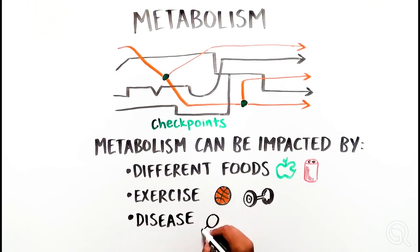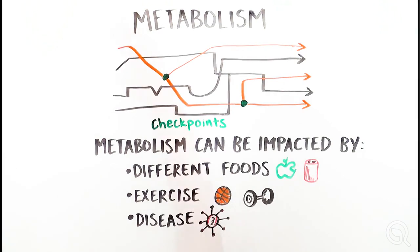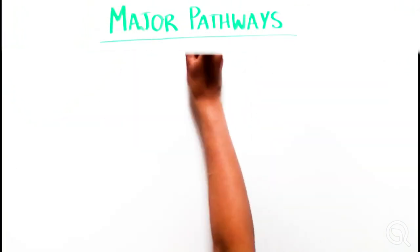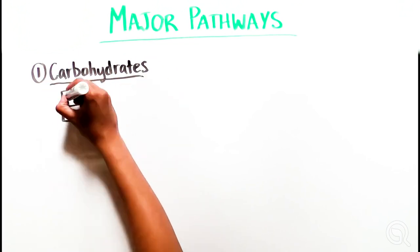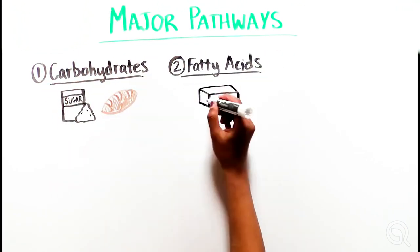Let's walk through some of these details together. The major metabolic pathways are those for carbohydrates, or sugars, fatty acids, or fats, and ketones.